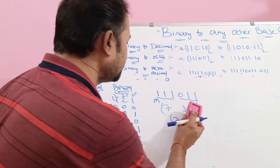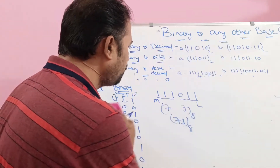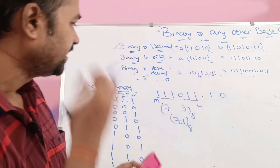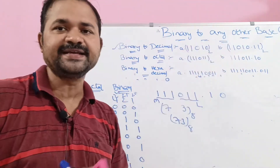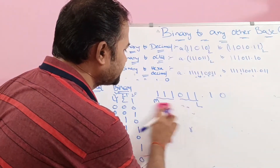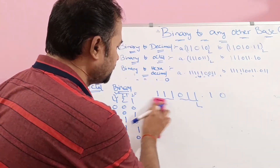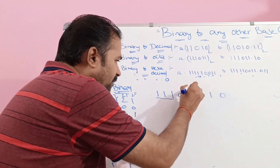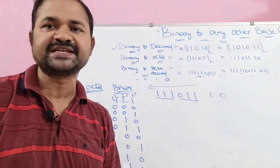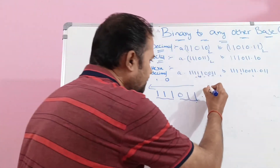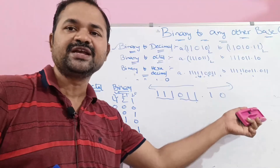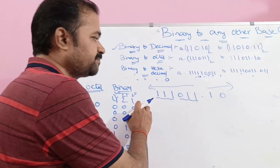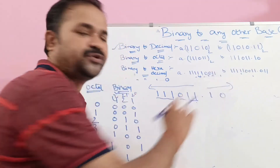Second example: 1110011.10. The integer part is the same as before. For the fractional part, after the dot we move from left to right. Before the dot, we group from right to left (LSB to MSB). After the dot, we group from left to right (MSB toward LSB).